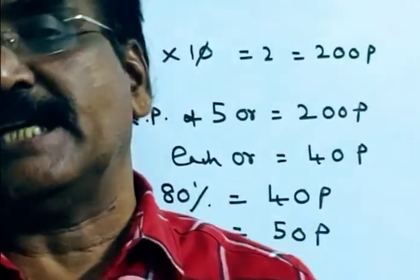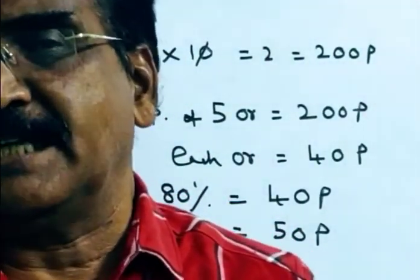That means, before the reduction, the price was 50 pies per orange. Thank you.